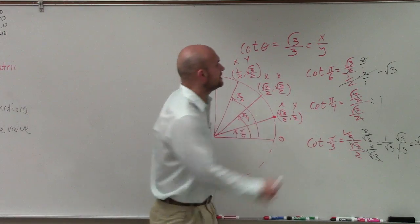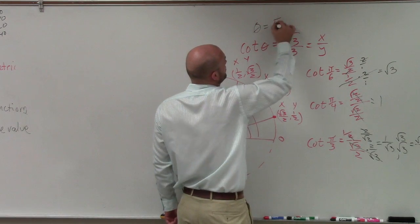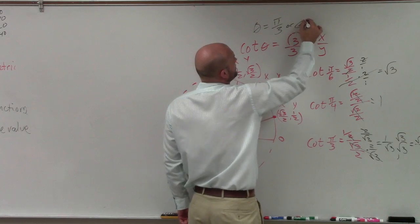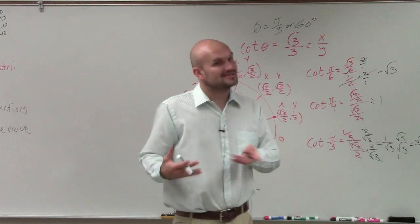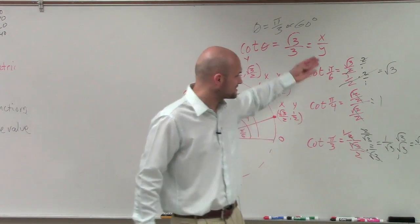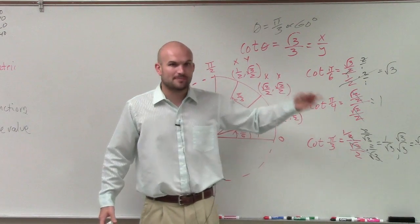So your answer is theta equals pi thirds or 60 degrees. So when you're dealing with cotangent and tangent, some of these are going to be a little tricky. You're going to have to understand what they represent.